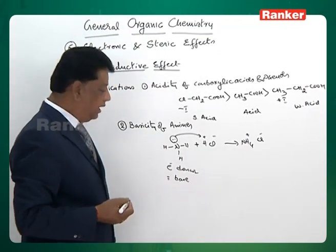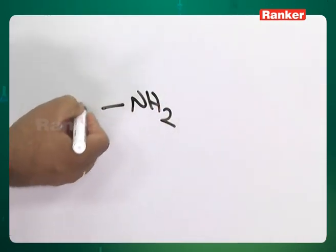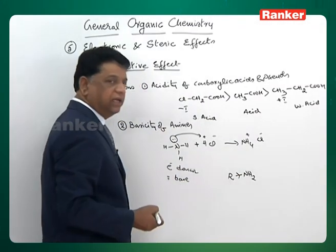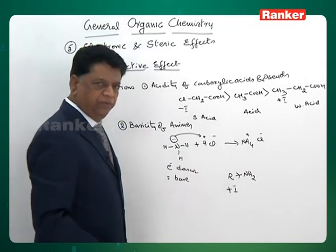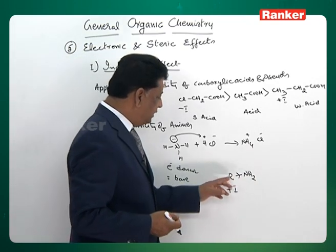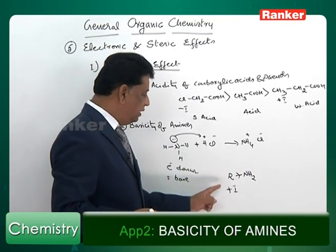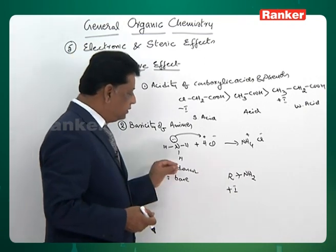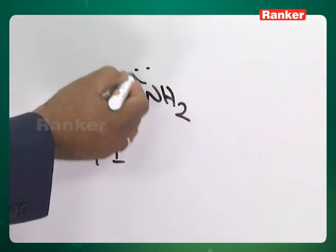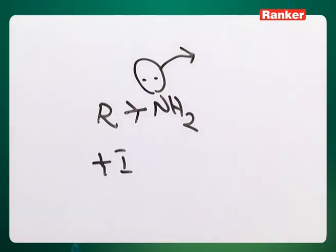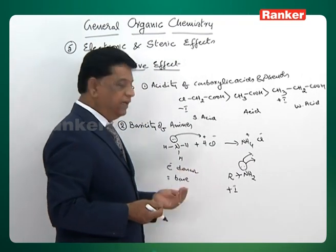Ammonia is acting as an electron donor, therefore it is a base. Now, if one alkyl group is attached to ammonia, the alkyl group acts as a plus-I group. Since nitrogen is more electronegative than carbon, it withdraws electrons, making the alkyl group truly act as plus-I. A small electron density shifts through the sigma bond to nitrogen, increasing its donating capacity beyond that of original ammonia.